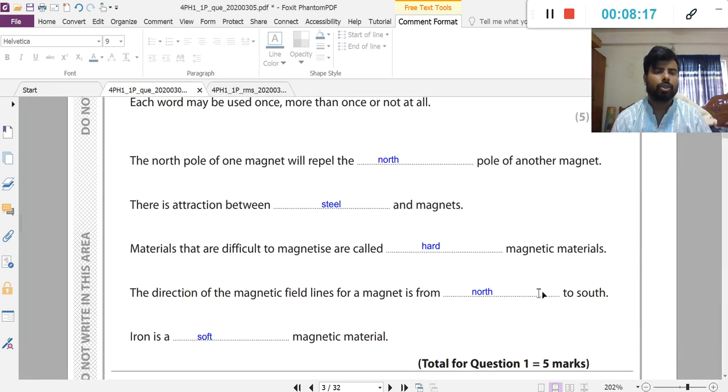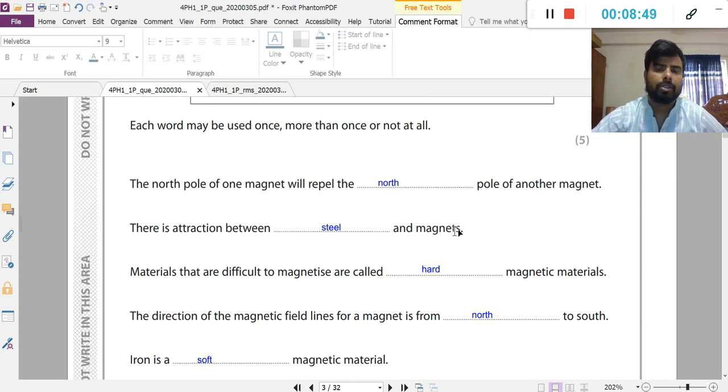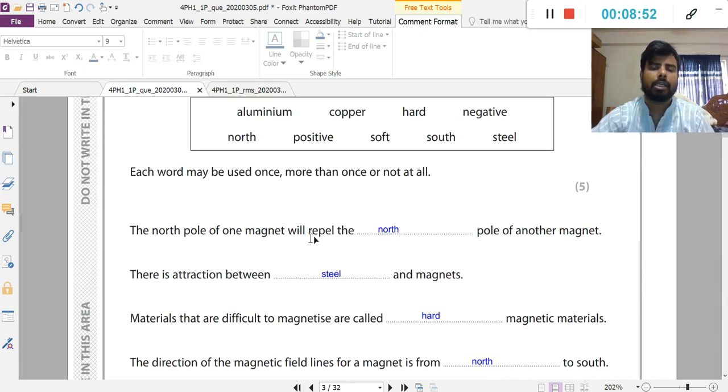Repeat this whole question. The north pole of one magnet will repel the north pole of another magnet. There is attraction between steel and magnets. The materials that are difficult to magnetize are called hard magnetic material. The direction of the magnetic field lines for a magnet is from north to south. Iron is a soft magnetic material. Total marks for question 1 equal to 5 marks. So you will get 5 marks if you answer like this.